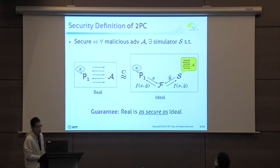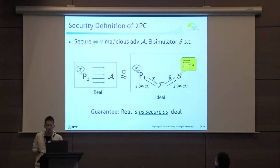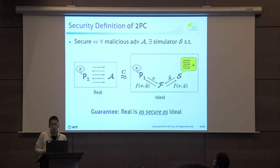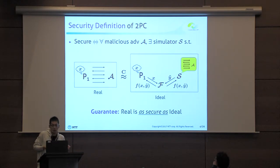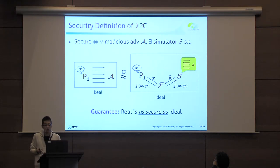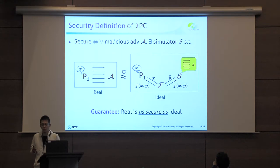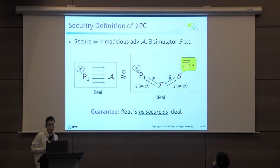Formally, we define the security of two-party computation by using a simulation paradigm. We consider a real world in which the function is computed by a protocol, and we also consider an ideal world in which the function is computed by a trusted third party. We define security by requiring that for any adversary in the real world, there exists a simulator in the ideal world such that the ideal world simulator can simulate the view of the real world adversary.